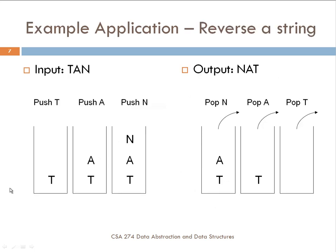Here is a simple example application of using a stack: reversing a string. If I have the input "tan" (T-A-N) and I want to reverse it to get "nat" (N-A-T), I read each character and push it onto the stack — read T, push T, read A, push A, read N, push N. Then after reading all characters, I output them by popping each one: pop N, print N, pop A, print A, pop T, print T — giving me N-A-T.